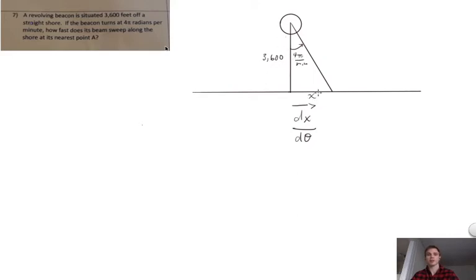Then we can use a tangent relationship, x over 3,600 is equal to the tangent of the angle, the current angle of this light from that closest point. So let's write that up. So tangent of theta, that's this angle here, is equal to x over 3,600.